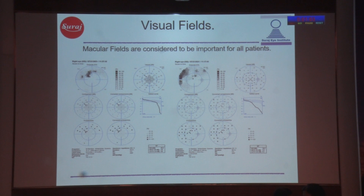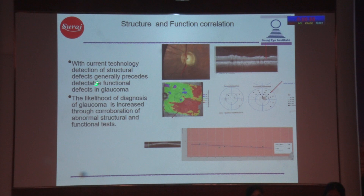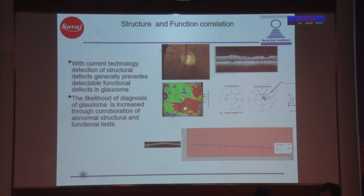With current technology, detection of structural defects generally precedes detectable functional defects in glaucoma. For structure-function correlation, you can see the optic is damaged correlating with the retinal nerve fiber notch, and this is the ganglion cell layer — you can see how closely it has come to the fovea. This is the deviation map, and at the 12-degree you can see how vividly it captures the loss of visual field and how close it is to the fovea, versus the 30-degree field.